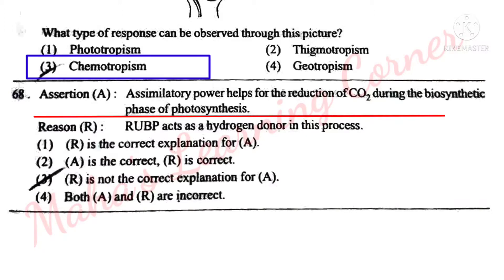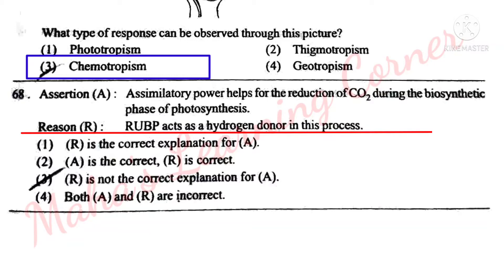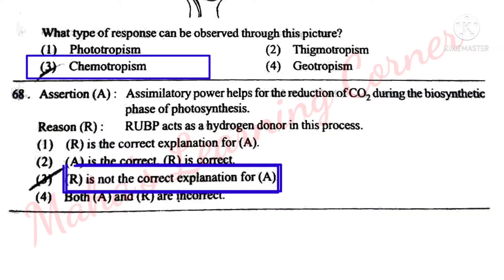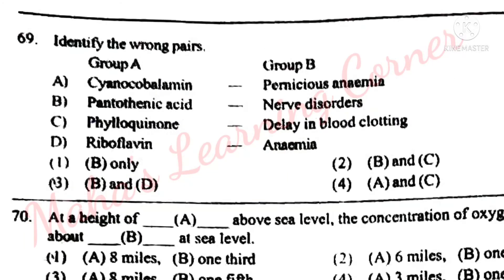Next question. Assertion A: Assimilatory power helps for the reduction of CO2 during the biosynthetic phase of photosynthesis – this is correct. Reason R: RUBP acts as a hydrogen donor in this process – this is wrong. So the correct answer is Option 3: R is not the correct explanation for A.